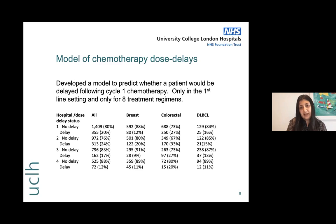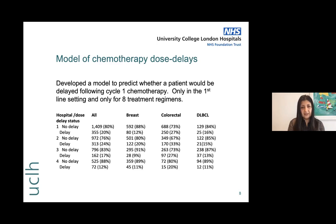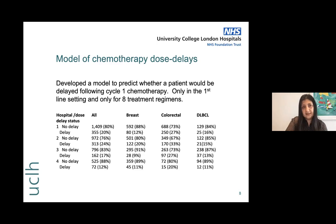When developing a risk prediction model, for every predictor — everything you think could cause something — you need at least 10 times the number of events. So if I had female gender, I'd need at least 10 delays; if I added males, I'd need 20 delays. You really need a lot of events to be able to predict well.